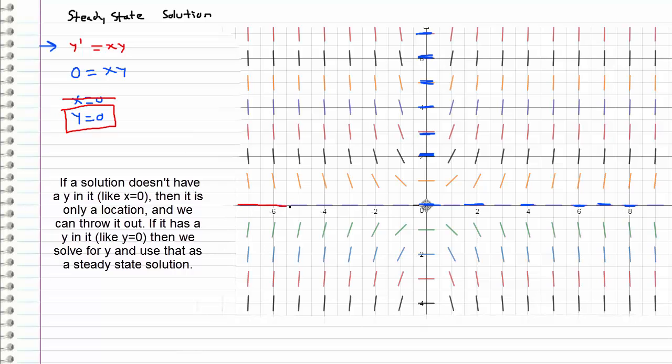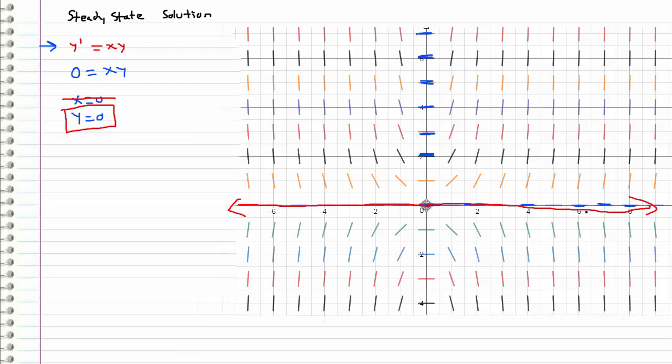Which means that all across the x-axis, the slope is 0. This represents our steady state solution because the slope is not changing.